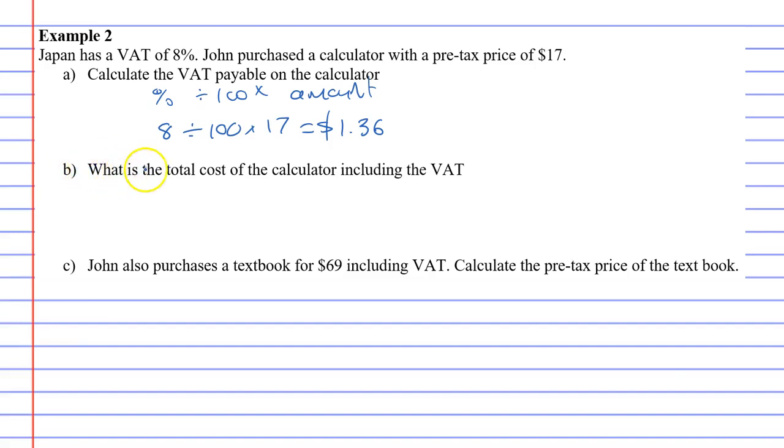Now question B says what is the total cost of the calculator including the VAT? So we've got to add the price of the calculator to the tax or the VAT, and that will give us $18.36.